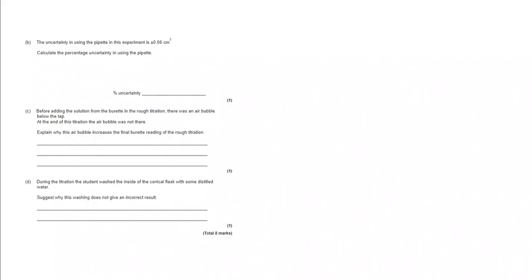OK, let's move on. We've got B, the uncertainty in using the pipette in this experiment is plus minus 0.06 cm cubed. Calculate the percentage uncertainty. Well...